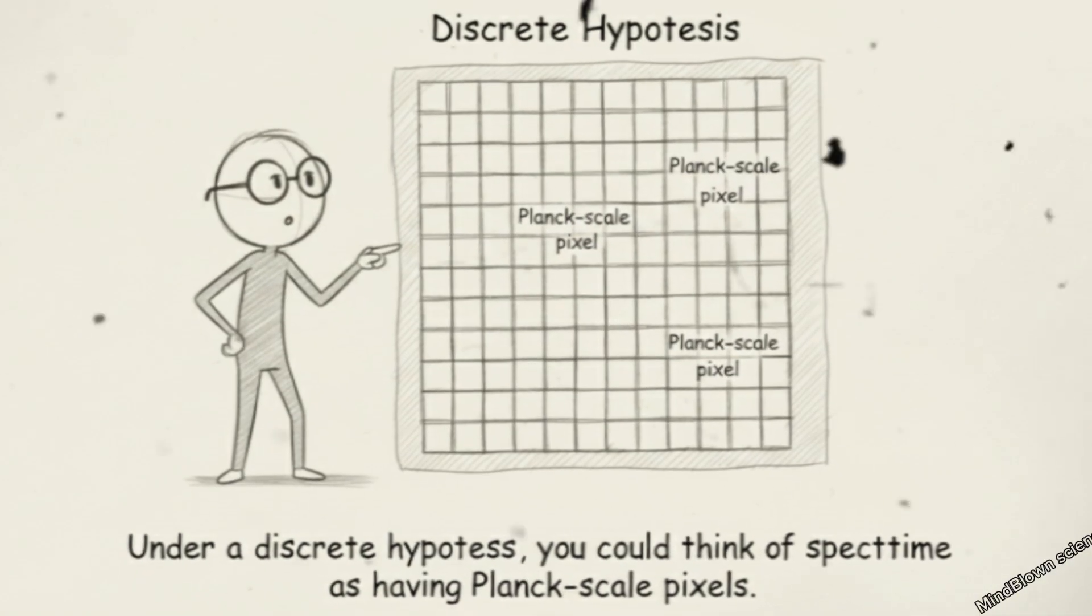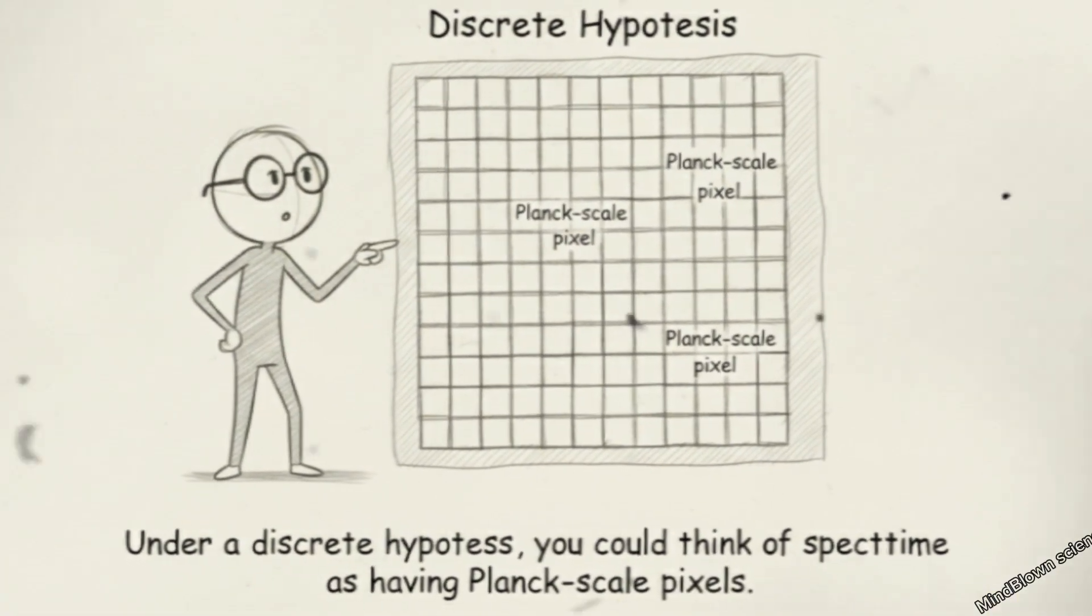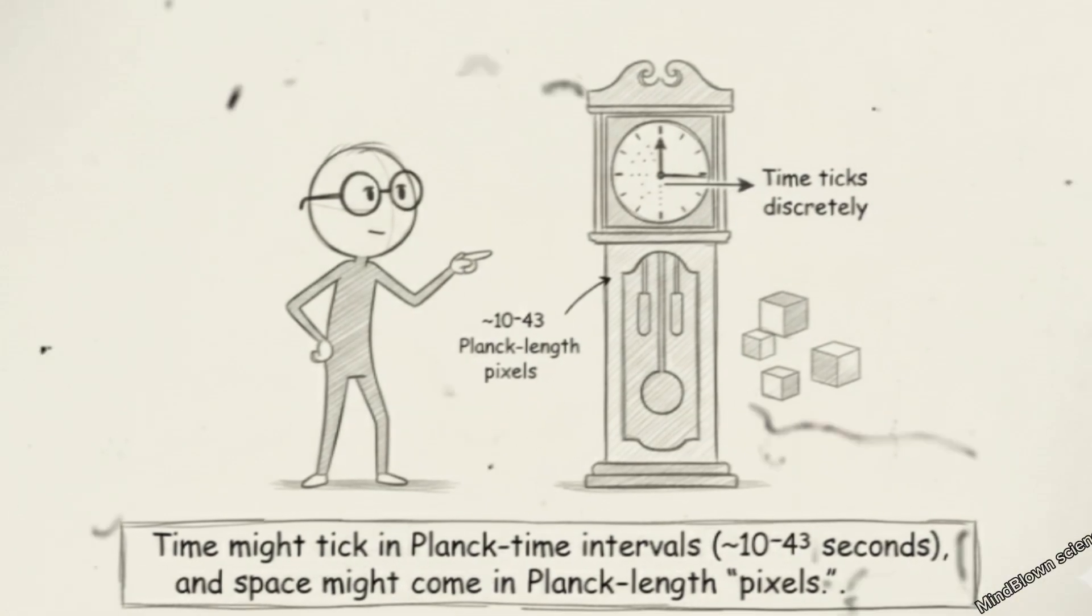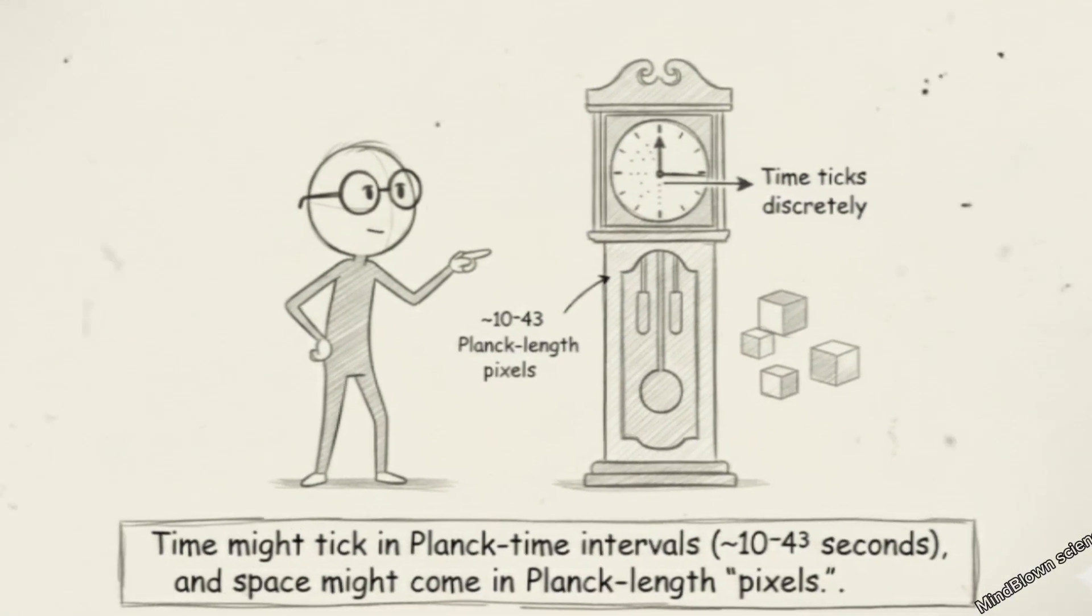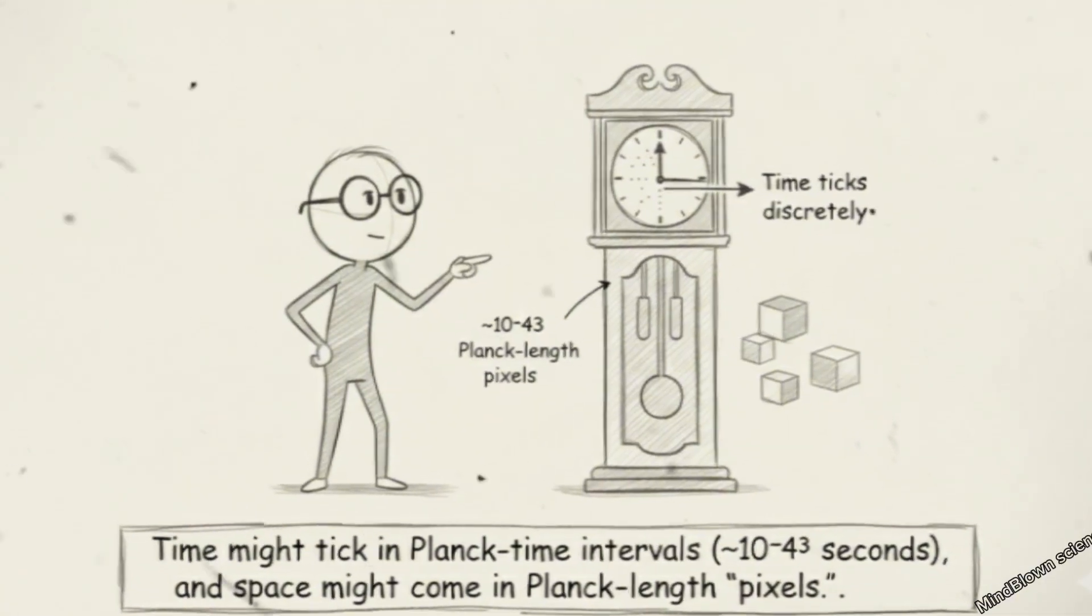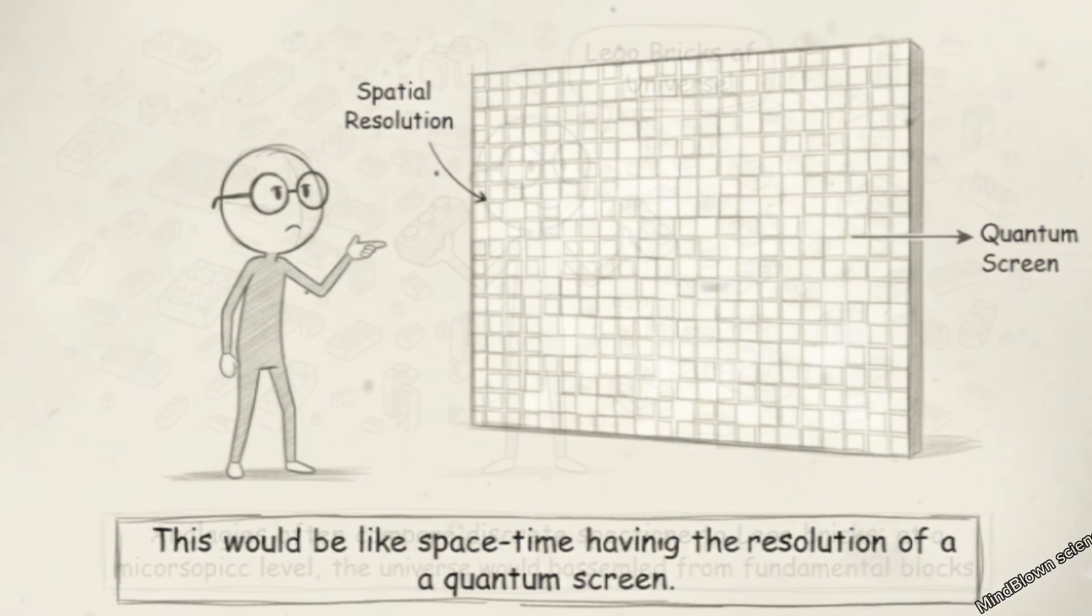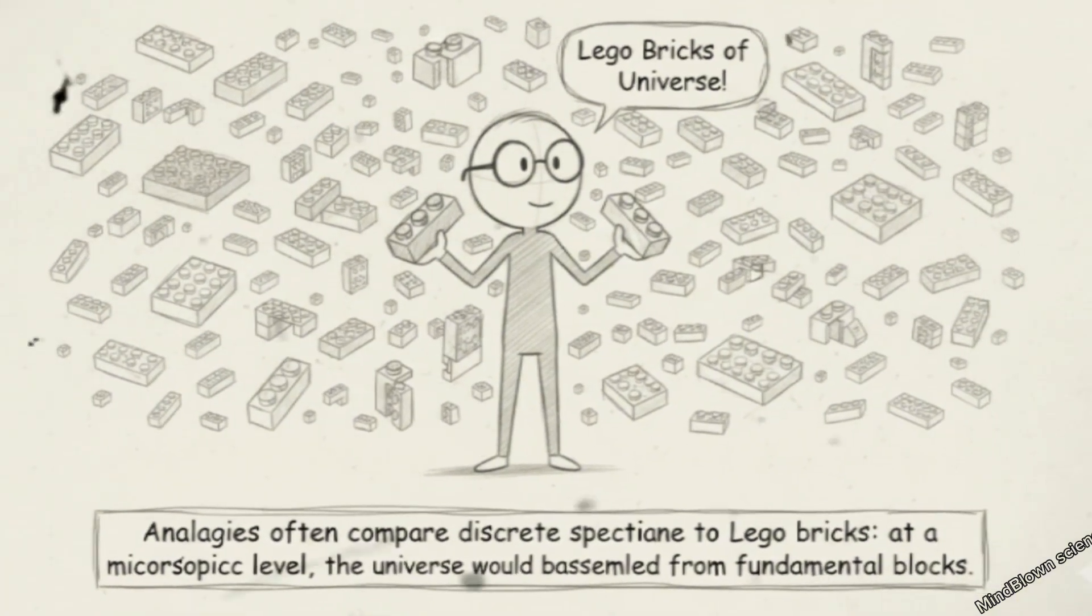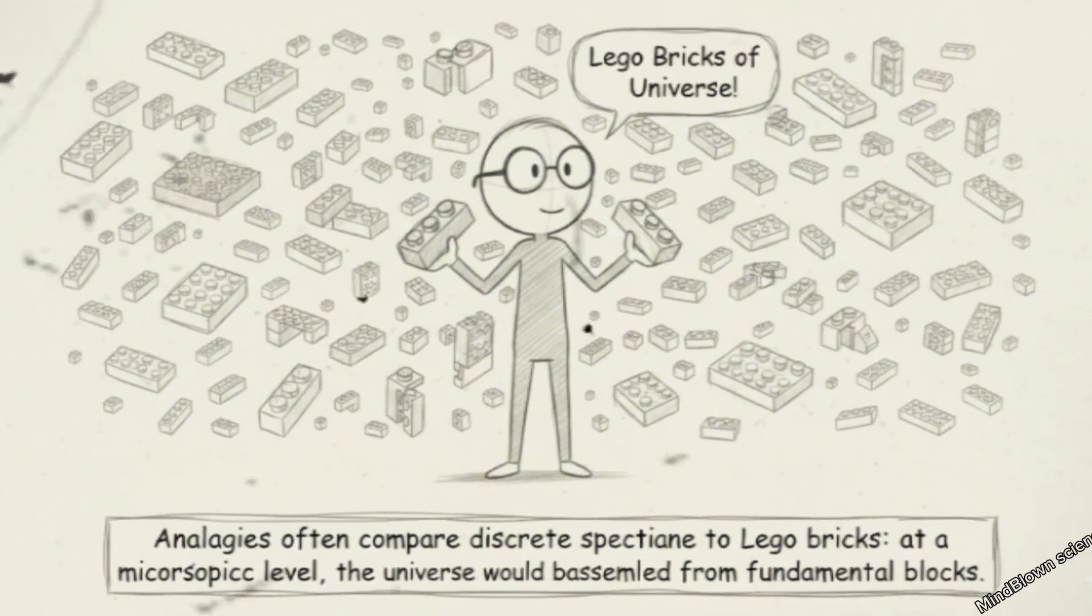Planck-scale pixels. Under a discrete hypothesis, you could think of spacetime as having Planck-scale pixels. Time might tick in Planck-time intervals, 10 to the minus 43 seconds, and space might come in Planck-length pixels. This would be like space having the resolution of a quantum screen. Analogies often compare discrete spacetime to Lego bricks. At a microscopic level, the universe would be assembled from fundamental blocks.